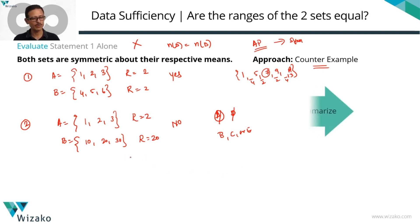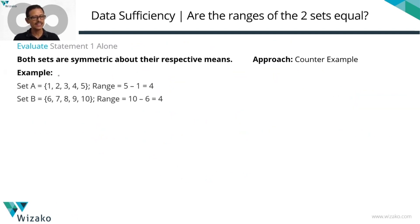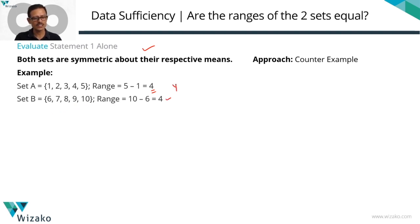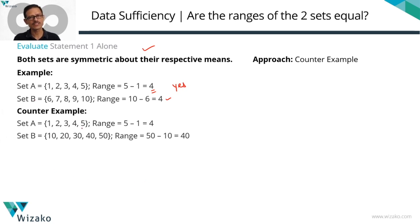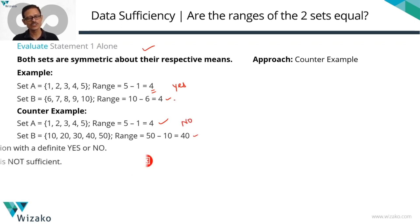Quick summary using a different set of numbers. With n of A and n of B both equal to 5: set A as 1, 2, 3, 4, 5 (AP, symmetric about mean, range = 4) and set B as 6, 7, 8, 9, 10 (consecutive, AP, range = 4) gives yes. But with set A as 1, 2, 3, 4, 5 (range = 4) and set B as an AP with common difference 10 (range = 40) gives no. We don't have a conclusive answer. Eliminate answer options A and D. We're down to B, C, or E.